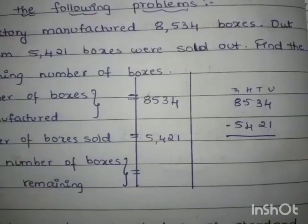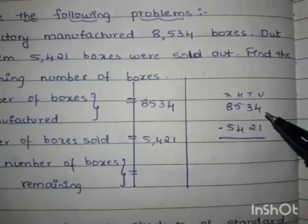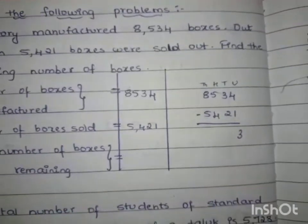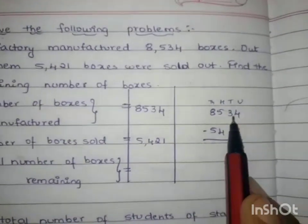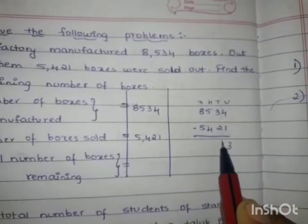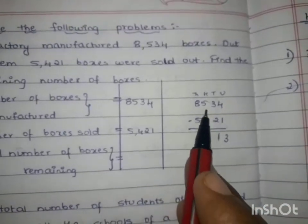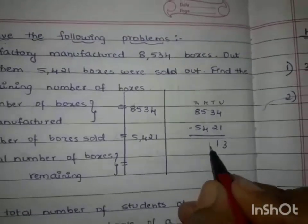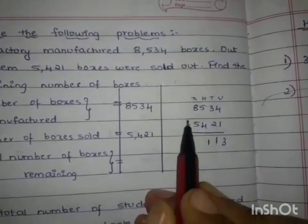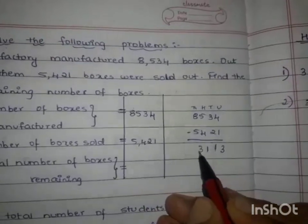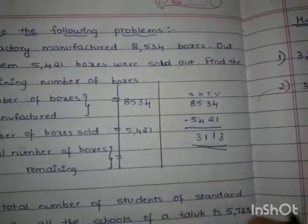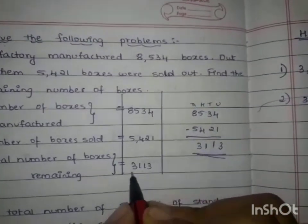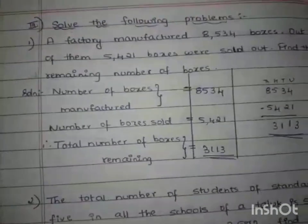Let us start subtracting them. In the units we have 4 and 1; 4 minus 1 is 3. Then we go for the tens: 3 and 2; 3 minus 2 is 1. Then for the hundreds: 5 and 4; 5 minus 4 is 1. Then 8 and 5; 8 minus 5 is 3. So this is our answer: 3,113. These are the number of boxes remaining.